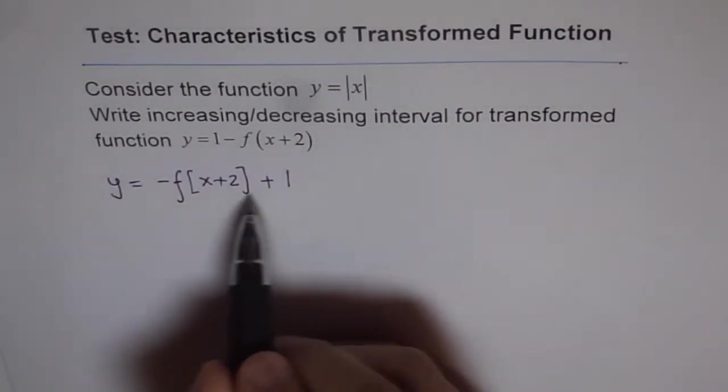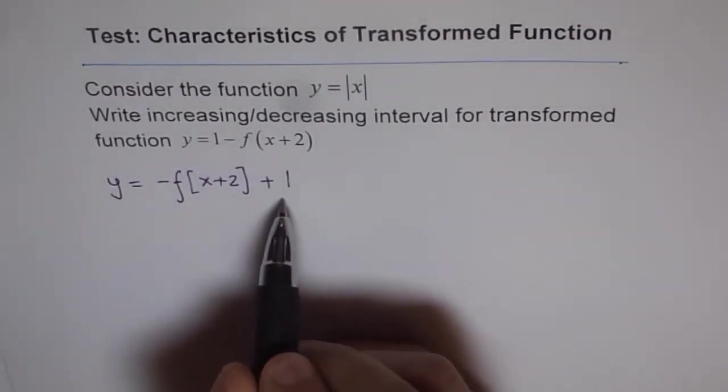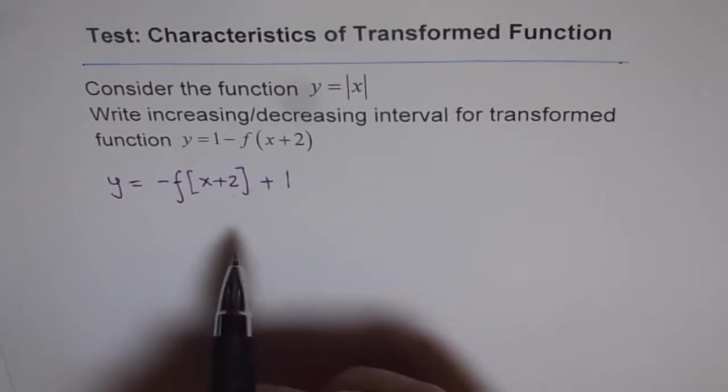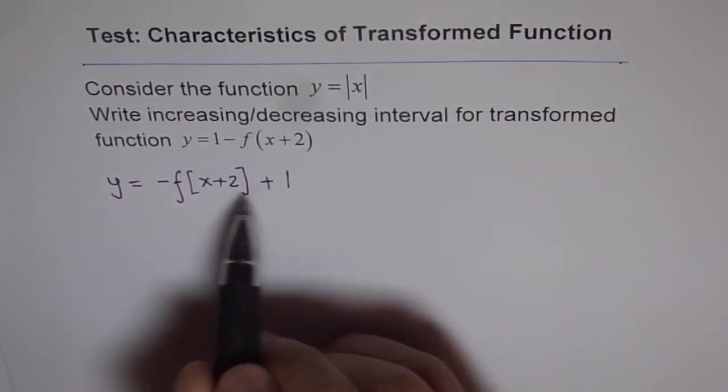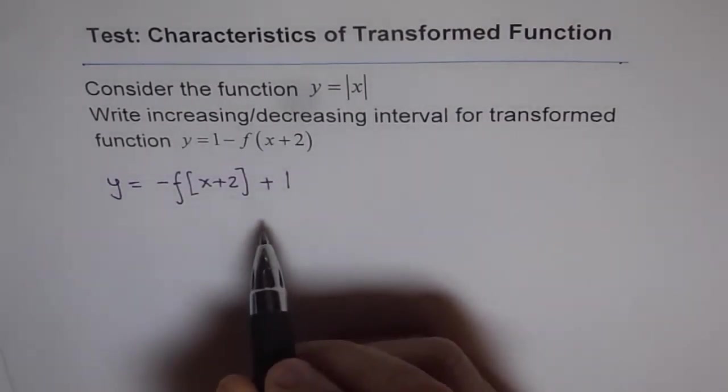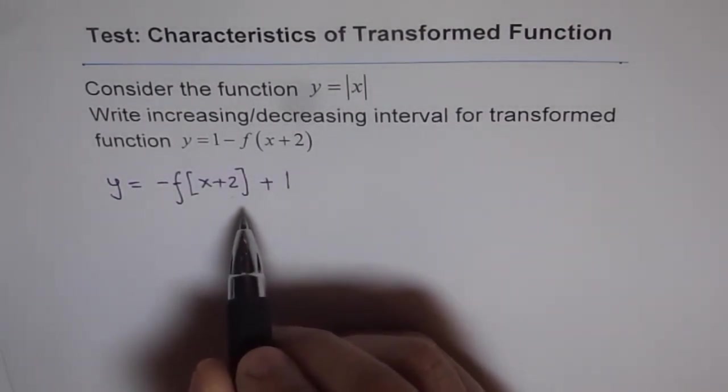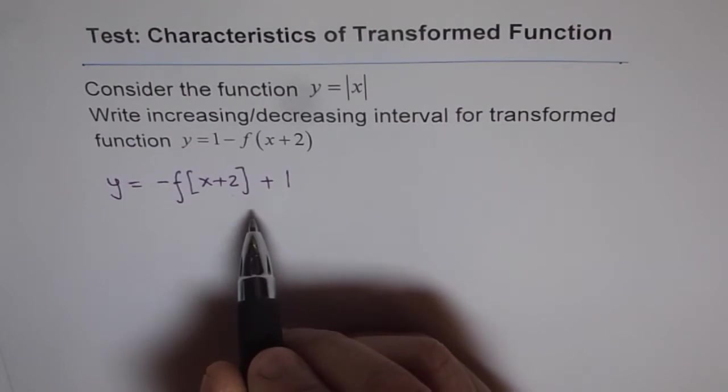And these two points here will change the point from where the interval divides. Do you understand? So these are the points which change. So, first we will try to do it like theoretically so that we can straight away answer a multiple choice question fast.